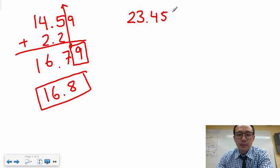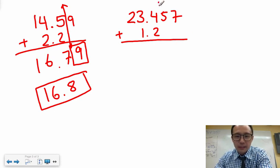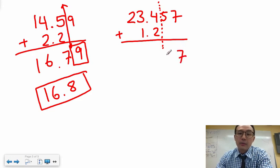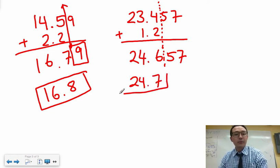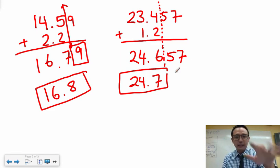Another addition example: 23.457 plus 1.2. I align the decimals, identify the cutoff at the last digit of the less precise number, add them together, and round at that position. The final answer is 24.7, and that's how you keep your final answer in the correct number of sig figs for addition and subtraction.